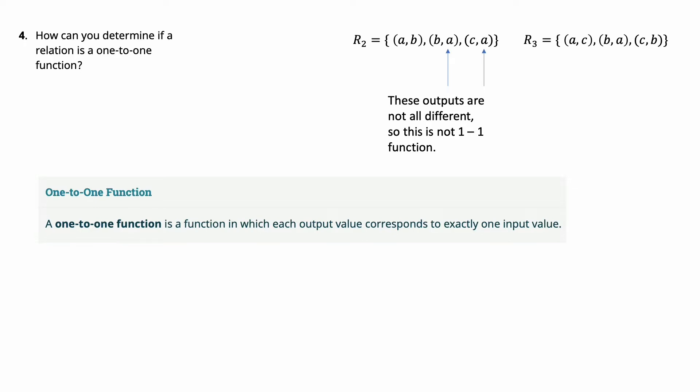So notice in the second one here, R2, it's not one-to-one because you have B and C going to the same point. Where the second, or R3 here, they all go to something different. So that one is a function.